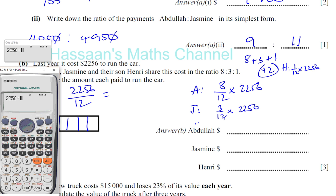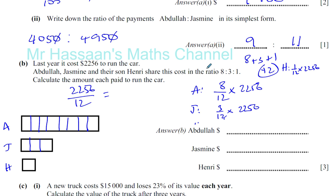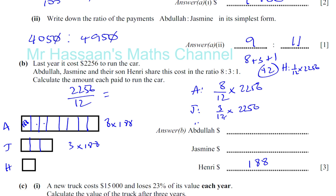That gives us $188. So there's $188 in each of these boxes. We can see that Henry is going to have $188. Jasmine is going to have 3 times $188, and Abdullah is going to have 8 times $188. That's another way of doing the same question — let's go get the same answers.